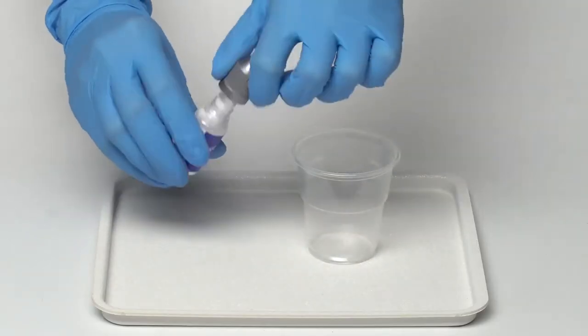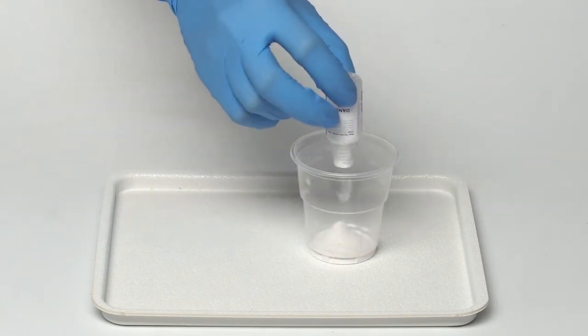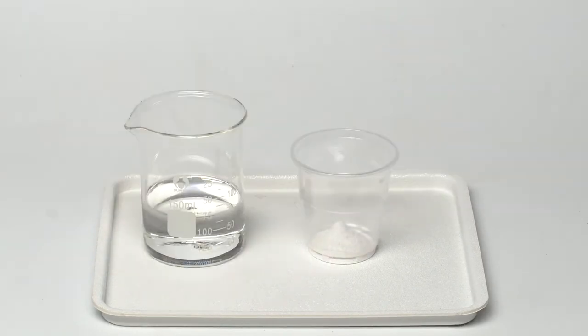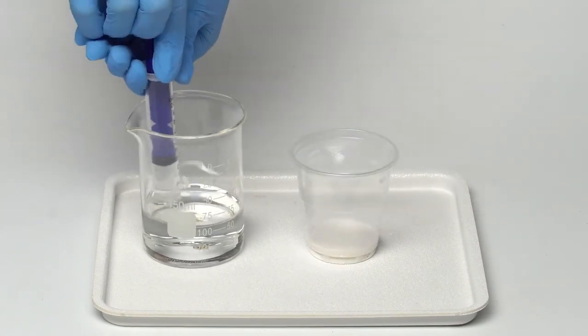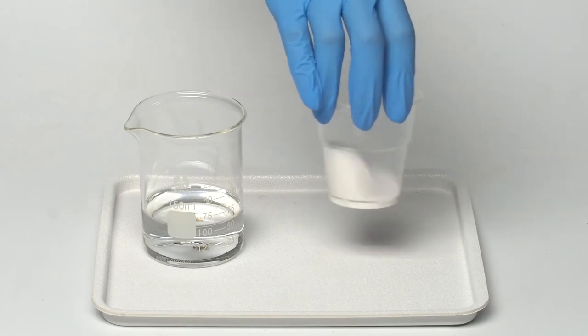Pour the entire bottle of calcium hydroxide into the first plastic cup. Using the syringe, add 15 milliliters of water to the cup and mix the contents with a swirling motion.